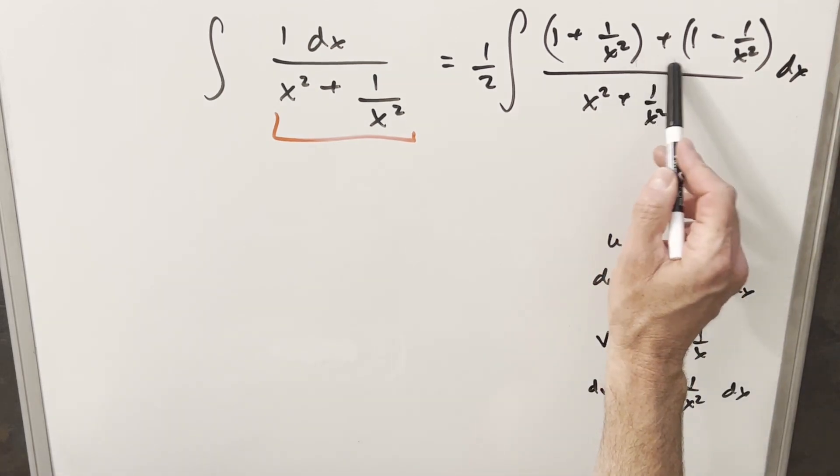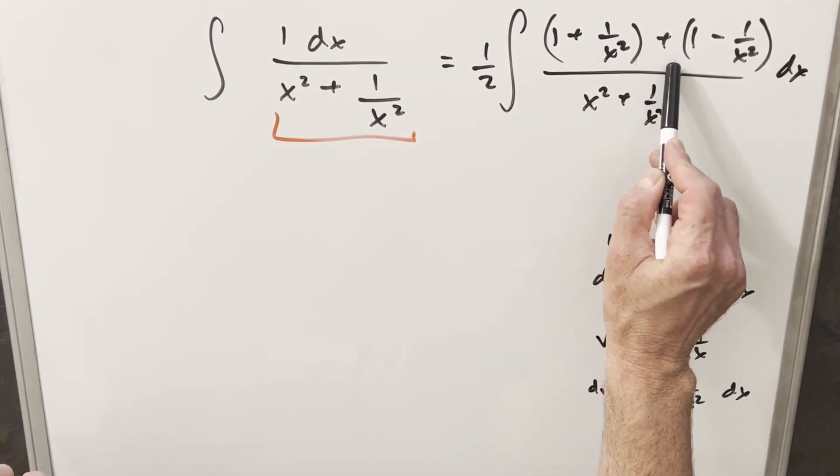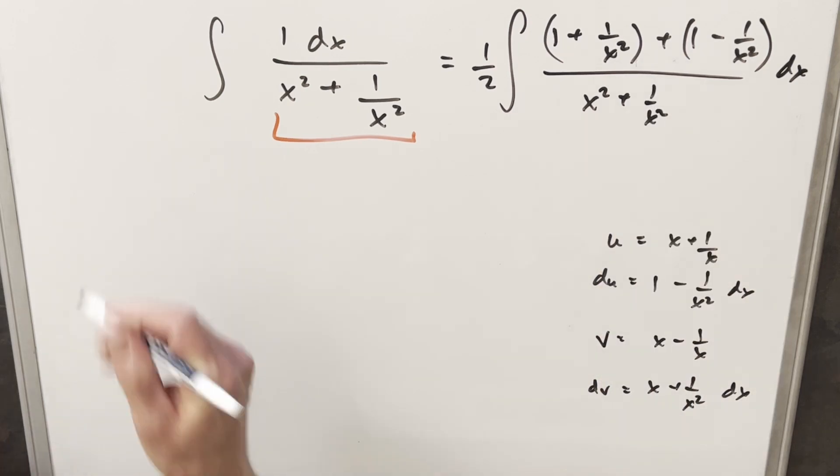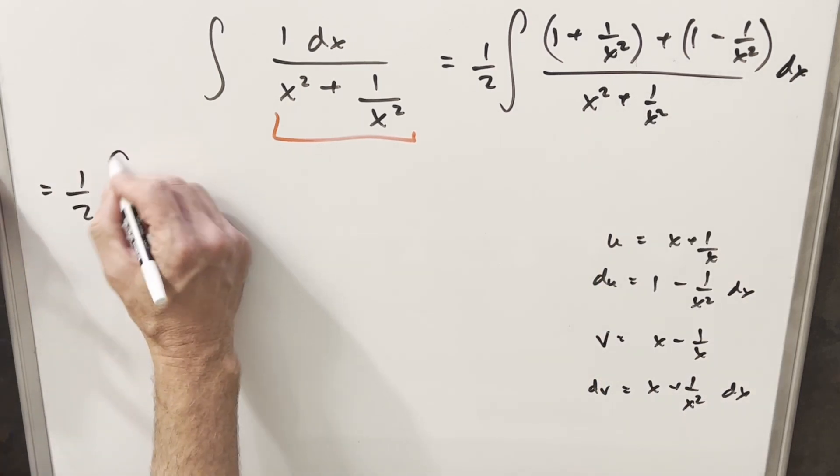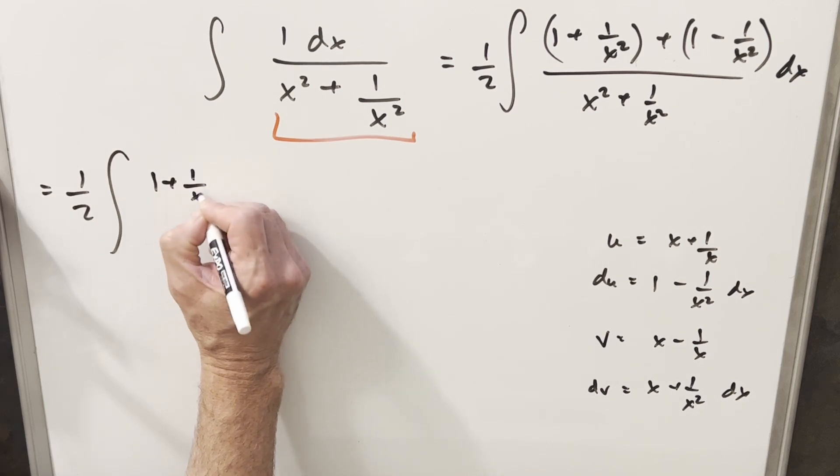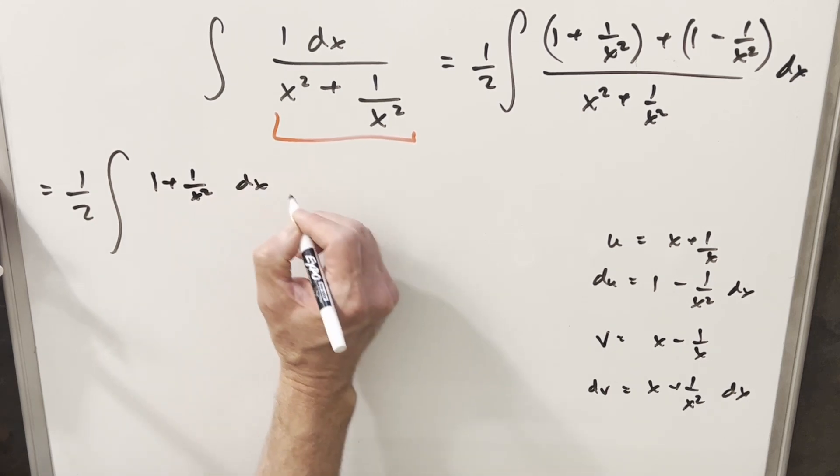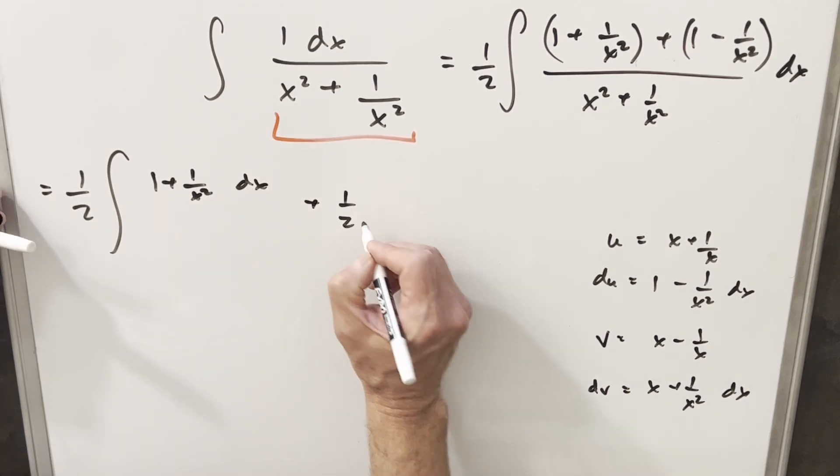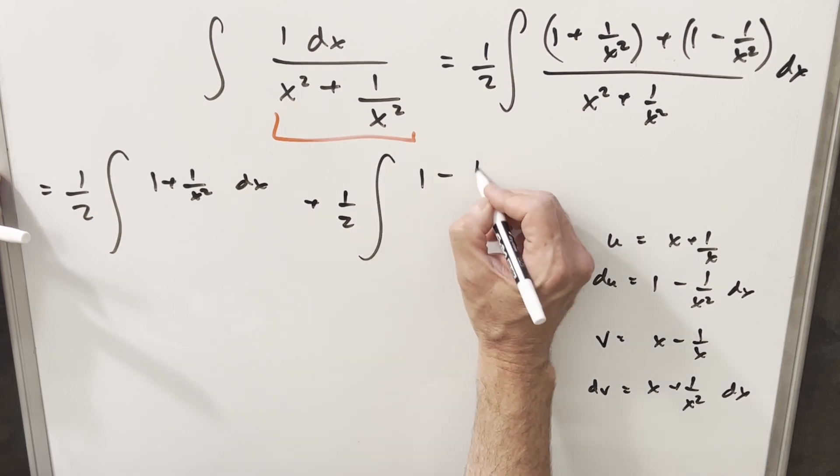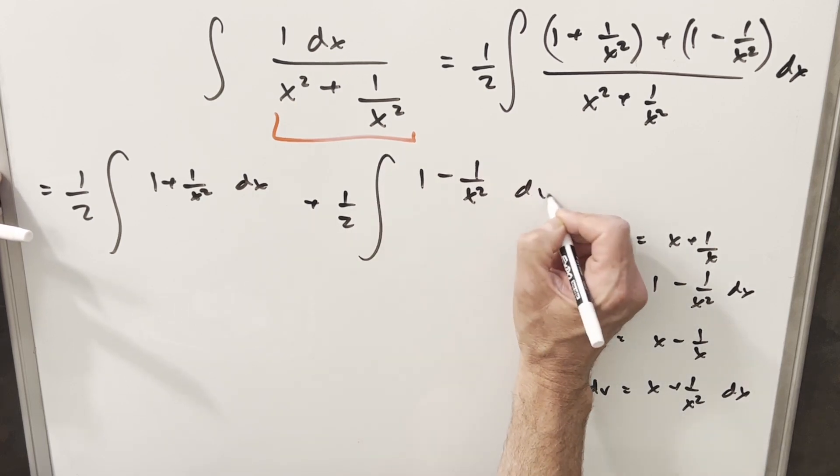Okay, now at this point, now that we get this more complicated numerator going on, what I can do is split this into 2 integrals. So let's do that really quick. And so in the first one we'll have, in our numerator, we'll have 1 plus 1 over x squared dx. And then in this second one, we'll still have a half in front. And we're going to have 1 minus 1 over x squared dx.